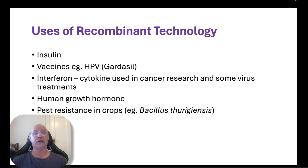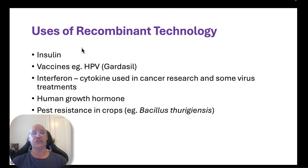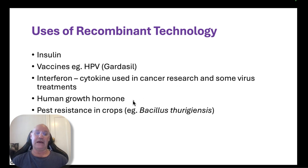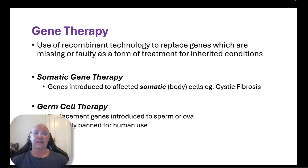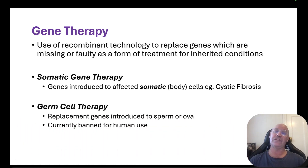Recombinant DNA technology has already been used widely and has tremendous potential for the future. It's used in the production of human insulin, to develop vaccines like the HPV vaccine Gardasil, for cancer treatment, for human growth hormone, and for making genetically modified crops like BT corn and BT cotton. There's also real potential for gene therapy — the use of recombinant DNA technology to replace genes that are missing or faulty, making it a form of treatment for inherited conditions.